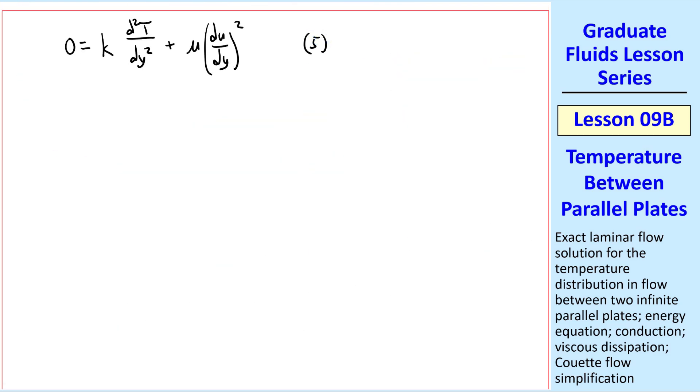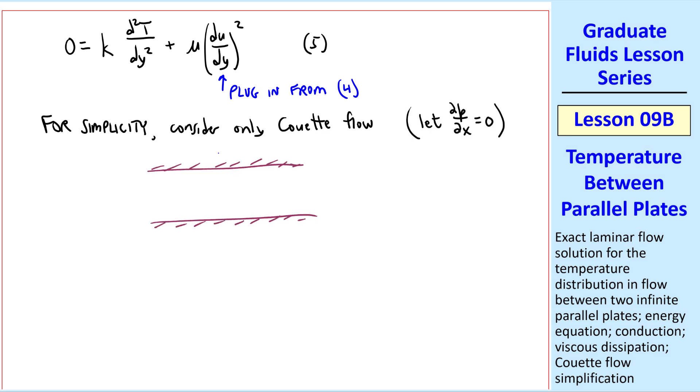I rewrote equation 5, and now we plug in the equation for u from equation 4. But for simplicity, let's consider only Couette flow. In other words, we let del p del x equal 0. So y goes from 0 to 2b. The bottom plate is stationary, and the top plate is moving, and equation 4 reduces to yu over 2b.